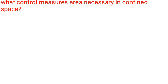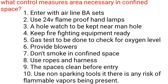What control measures are necessary in confined space? 1. Enter with airline BA sets. 2. Use 24V flameproof hand lamps. 3. A hole watch to be kept near the manhole. 4. Keep firefighting equipment ready. 5. Gas test to be done to check for oxygen level. 6. Provide blowers. 7. Do not smoke in confined space. 8. Use ropes and harness. 9. The space must be clean before entry. 10. Use non-sparking tools if there is any risk of flammable vapors being present.